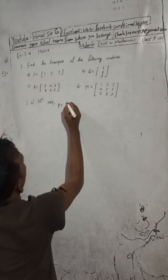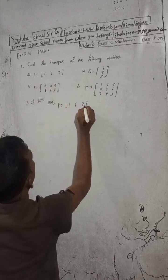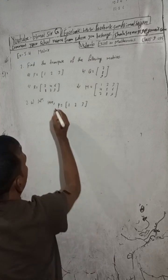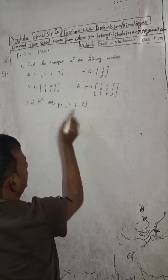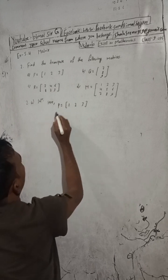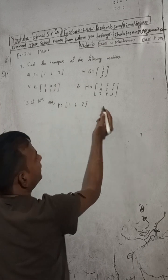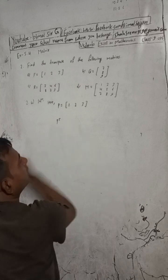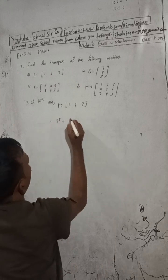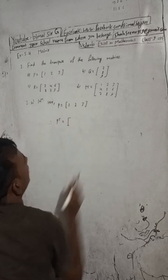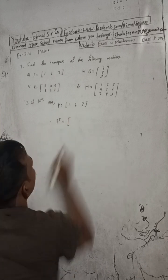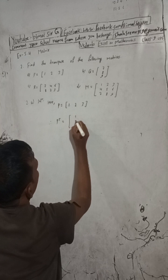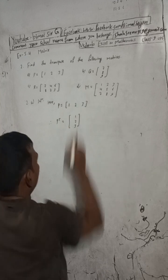P is given as [1, 2, 3]. We have to find the transpose. By interchanging the row and column, we get P transpose. So this first row becomes a column — write it as a column matrix: 1, 2, 3. This is the answer.